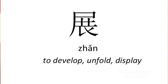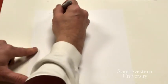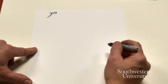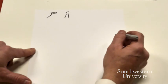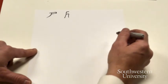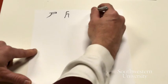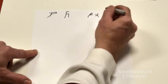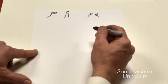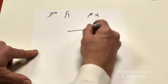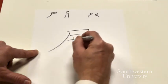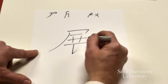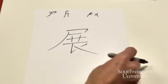Zhan, to open up, to display, the top part is a depiction of a body. Something like an adaptation of a person. And then the bottom part is an obsolete component that meant two hands. So if you can think of two hands in that, it may help you remember it. Heng, zhe, heng, pie, heng, shu, shu, heng, shu, go, pie, na. Zhan.